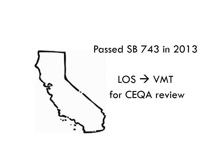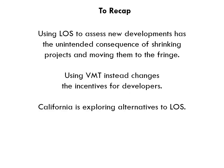We have used level of service to evaluate projects for decades, and changing the system will take time — but change is on the way. In 2013, California passed SB 743, which required cities to move away from level of service for their environmental review process, known as CEQA. To recap: using level of service to assess new developments has the unintended consequence of shrinking projects and moving them to the fringe. Using VMT instead changes the incentives for developers. And finally, California is exploring alternatives to level of service.